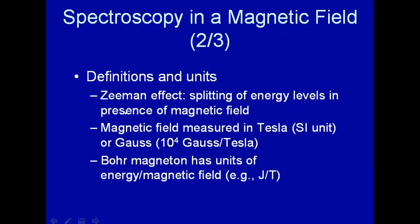Let's talk about some definitions and units. There's a name for the effect when you put degenerate energy levels in a magnetic field and they split: that's called the Zeeman effect, splitting of energy levels in the presence of magnetic field. Magnetic field is measured in units of Tesla, that's the SI unit, or the older unit is Gauss. There's 10 to the fourth Gauss per Tesla.